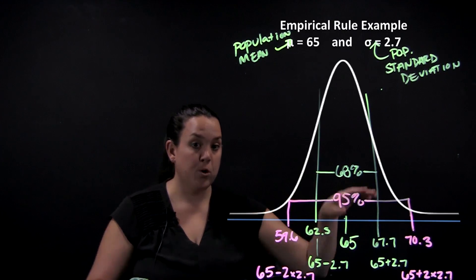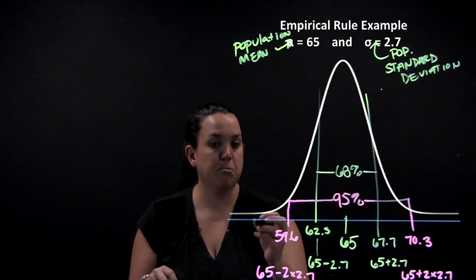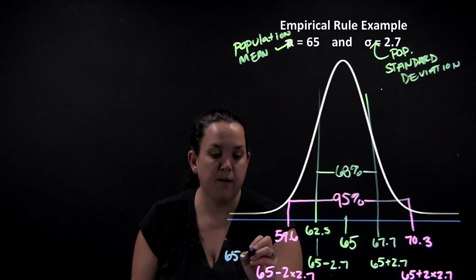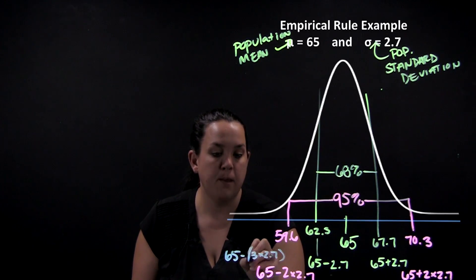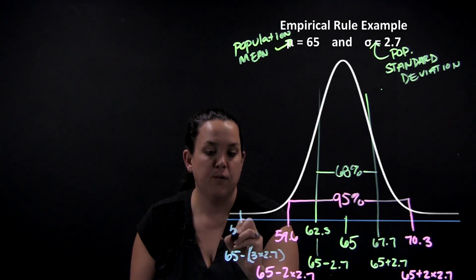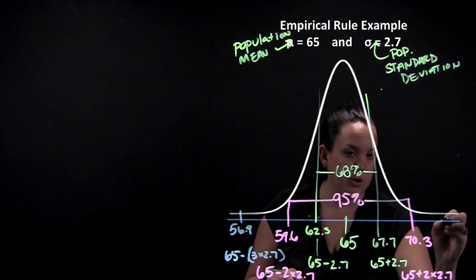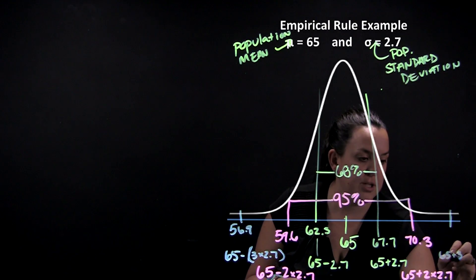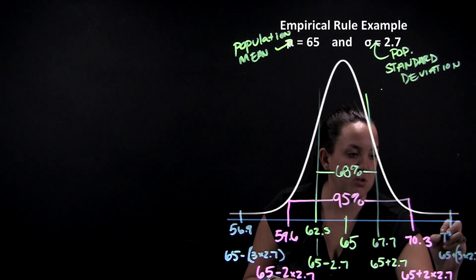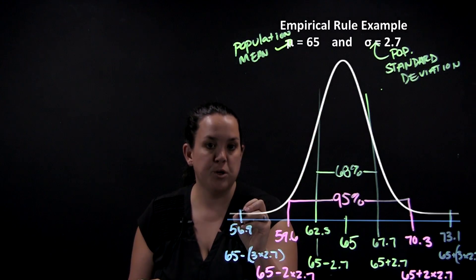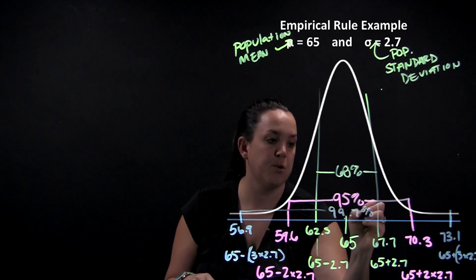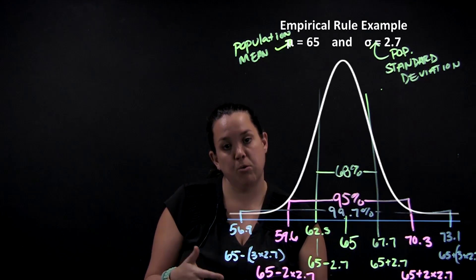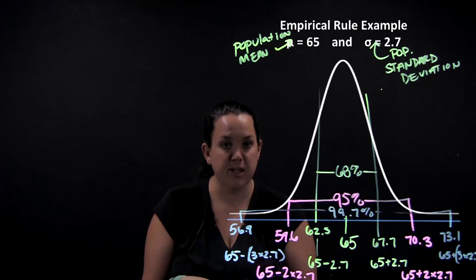And then the empirical rule goes out one more step, so three standard deviations above and below the mean. So the mean is the center. This time I will subtract three standard deviations, so 65 minus 3 times 2.7, and that brings me down to 56.9. And then up here, if I were to go out three standard deviations, I'm going to do 65 plus 3 times 2.7, and that brings me up to 73.1. So in between these values we will include 99.7% of our population. So what that means is between 56.9 and 73.1 inches, we would have 99.7% of college female heights.